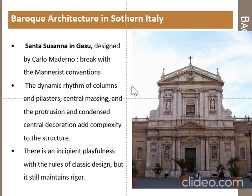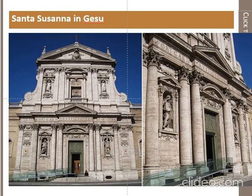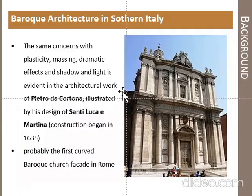There is an incipient playfulness with the rules of classical design, but rigor is still maintained. The use of classical geometry is still present in early Baroque. Curvilinear forms are used in the facade, decoration has been added in a more elaborate way than in early and High Renaissance, sculpture has been set into niches — that is the main feature of Baroque architecture.